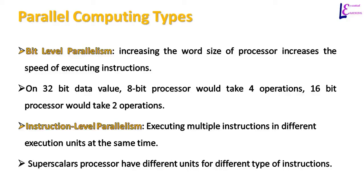In instruction level parallelism, multiple instructions are executed in different execution units at the same time. The same type of instruction can be given to one execution unit. For example, operations on integers can be assigned to one execution unit, while another execution unit is assigned operations on rational numbers. This type of parallel computing occurs in superscalar processors that have different execution units for different types of instructions.